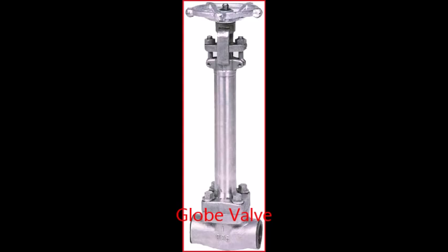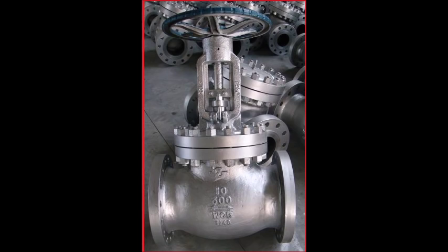The plug is also called a disc. In globe valves, the plug is connected to a stem which is operated by screw action using a hand wheel in manual valves. Typically, automated globe valves use smooth stems rather than threaded and are opened and closed by an actuator assembly.